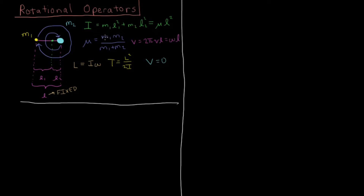Some terms defined in the previous video: the moment of inertia I, which is M1 times L1 squared plus M2 times L2 squared — the rotational equivalent of mass, representing resistance to angular acceleration. We can derive that this equals the reduced mass of the system times the total bond length L squared. The reduced mass, just as for the harmonic oscillator, is M1 times M2 over M1 plus M2.